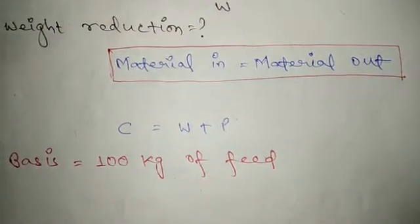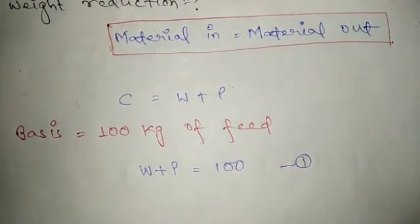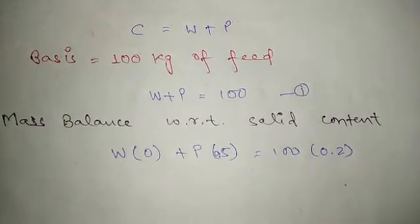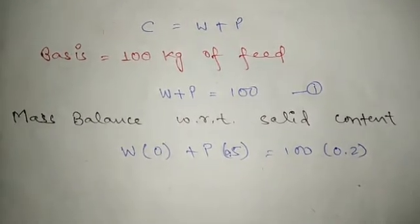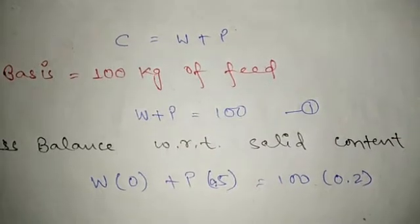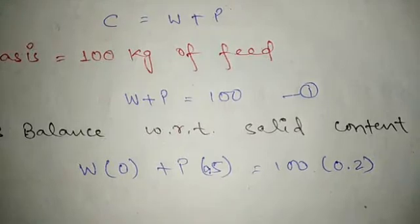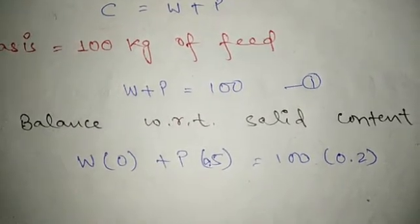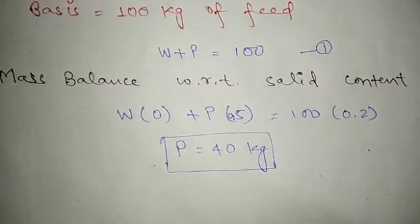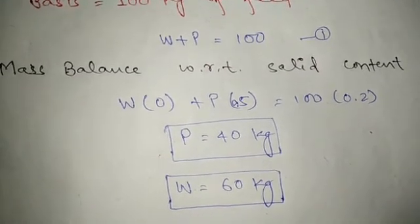With basis = 100 kg of feed, C = 100 kg, so W + P = 100. Writing the mass balance with respect to solid content: water has 0 percent solid content; the product has 50 percent moisture so its solid content is 0.5; the reactant is 100 kg with 80 percent moisture so solid content is 0.2. Solving this equation gives P = 40 kilograms. Substituting back gives W = 60 kilograms.